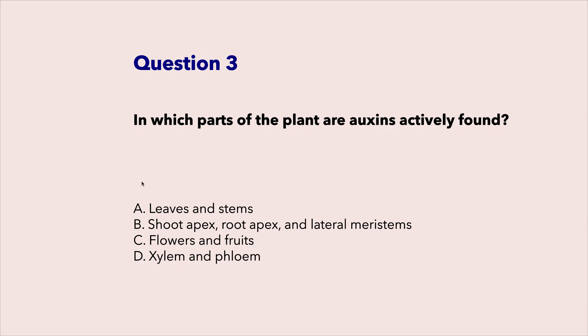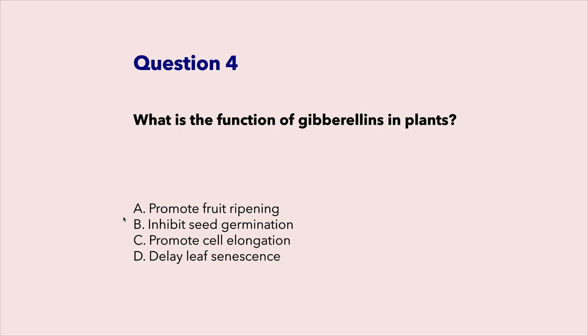Which part of the plant are auxins actively found? Shoot apex, root apex, and lateral meristems. What is the function of gibberellins in plants? Promotes cell elongation.